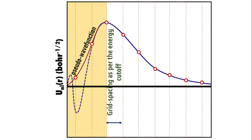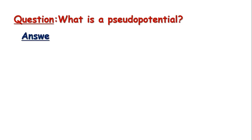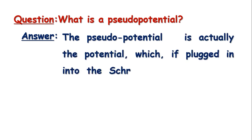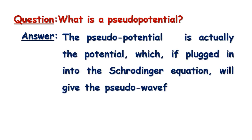But then what is the pseudopotential? The question still remains, right? The pseudopotential is actually the potential which, if plugged in into the Schrödinger equation, will provide the pseudo wave function as a solution. Or simply, the potential associated with the pseudo wave function is called the pseudopotential.